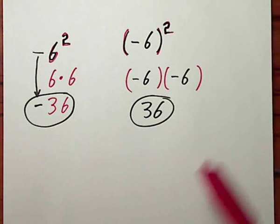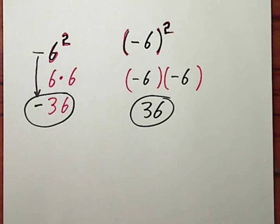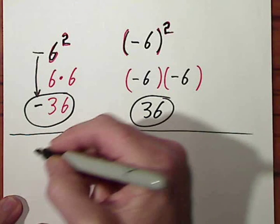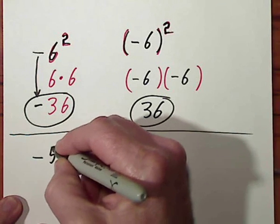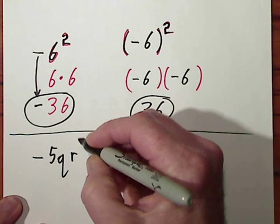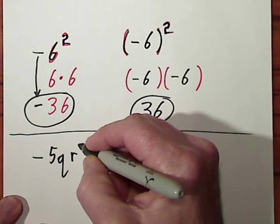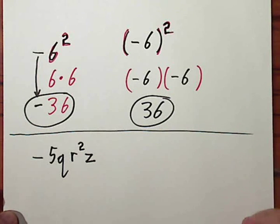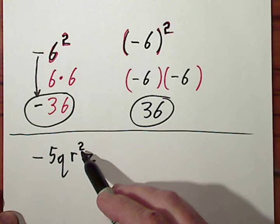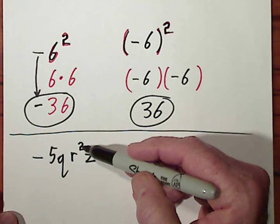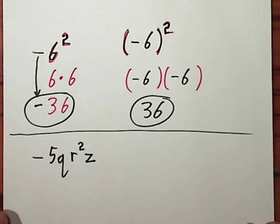This is actually easier to see in a more complicated problem. If I gave you -5qr²z, you wouldn't think that the exponent applied to really anything else except the r. So when it's more complicated, it's actually more obvious that the exponent only applies to the very thing it touches.